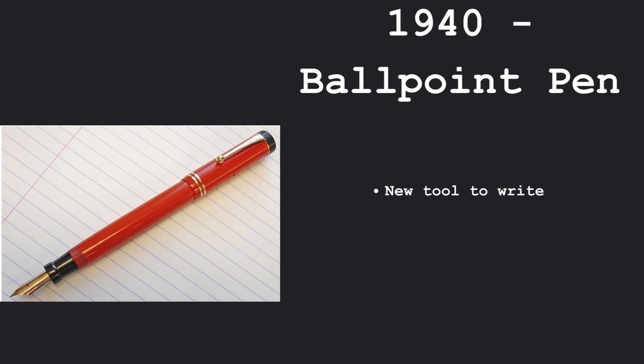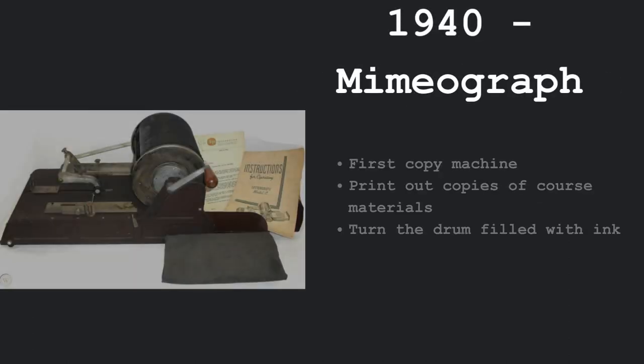In 1940, the ballpoint pen was invented which was a new tool to write that was used in schools and in everyday life. Another invention that occurred in 1940 was the mimeograph, which was also known as the first copy machine, and educators were able to print out copies of course materials. It required that you turn the drum filled with ink.